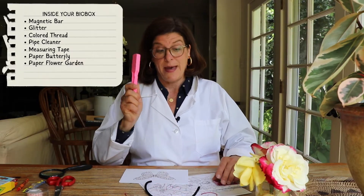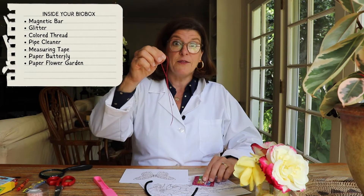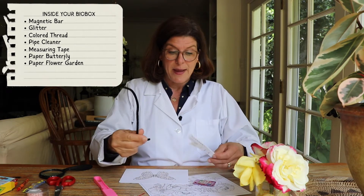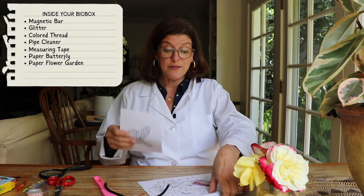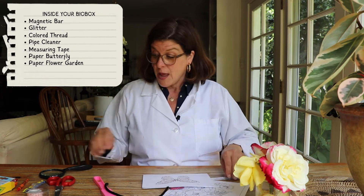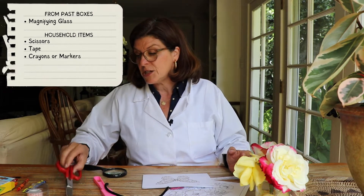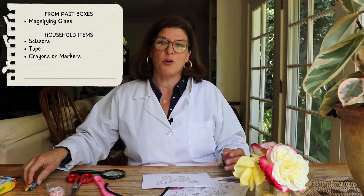We're going to do a pollination simulation. We're going to create a paper butterfly model and also use a paper flower garden. Inside your BioBox you'll find a magnetic bar, some glitter, some colored thread, a pipe cleaner, measuring tape, a paper butterfly, and a paper flower garden. You'll also need your magnifying glass from past boxes, plus scissors, tape, and some crayons or markers from your house.